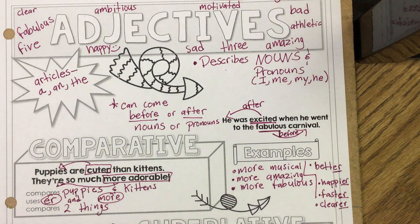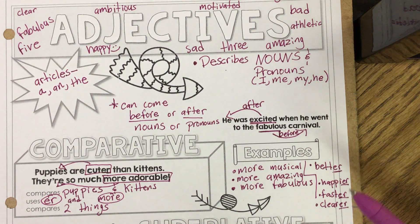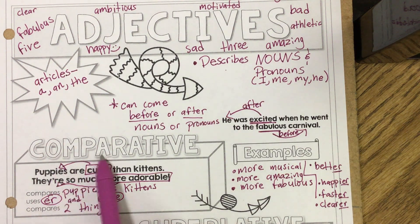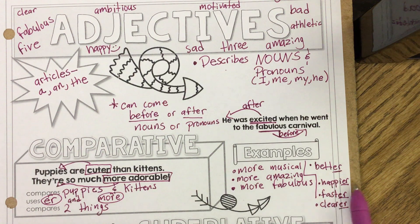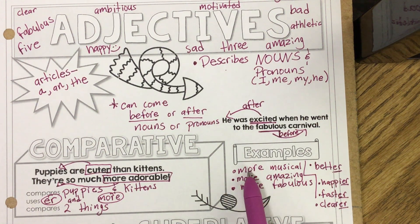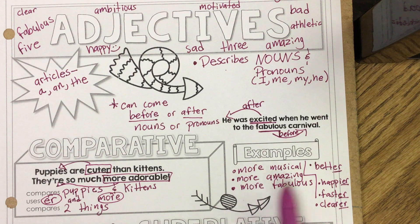Please unpause if you're ready to move on. To summarize: comparative adjectives end with -er, like better, happier, faster, clearer — or they start off with the word 'more': more musical, more amazing, more fabulous.